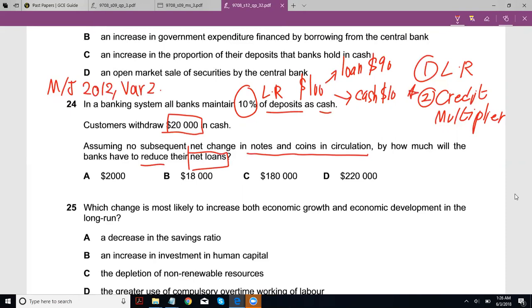So this question can in fact be looked at in another way. I could literally rephrase this question and say: because customers deposit $20,000 in cash, how much would banks increase their net loans? Because the amount they increase their net loans when customers deposit $20,000 is the same by which they'll have to decrease their net loans when customers withdraw $20,000. So there are two ways to look at this question.